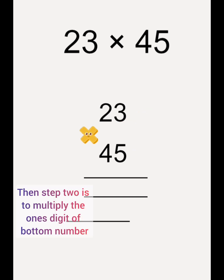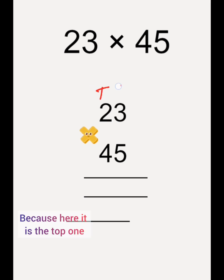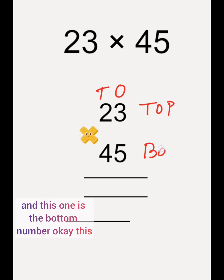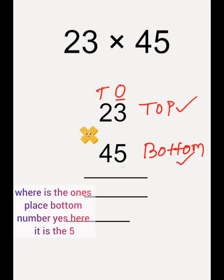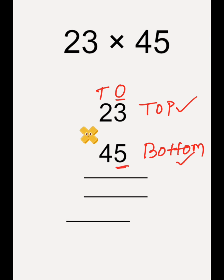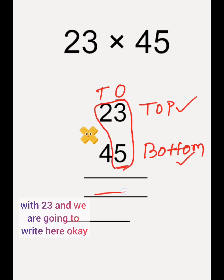Step 2 is to multiply the 1's digit of the bottom number. Because here it is the top one and this one is the bottom number. This is the top number, this is the bottom number. So where is the 1's place bottom number? Yes, here it is the 5. So 5 we are going to multiply with 23 and we are going to write here.